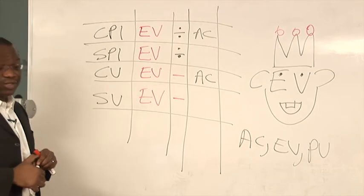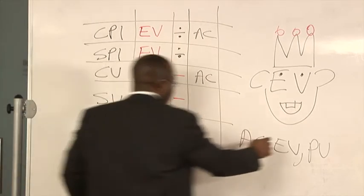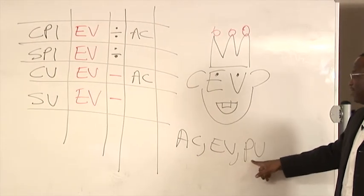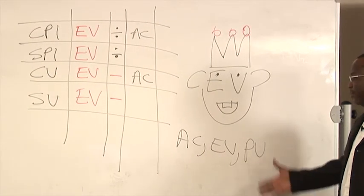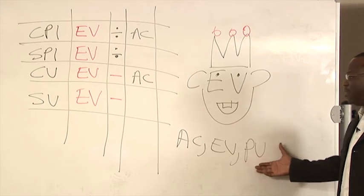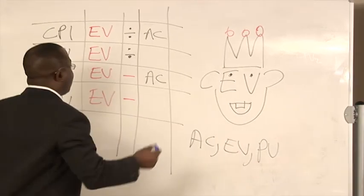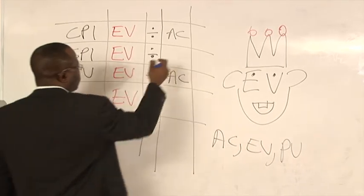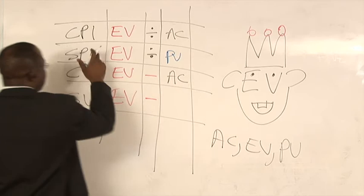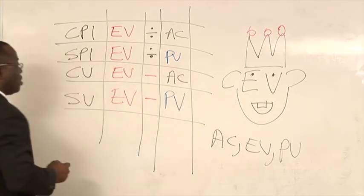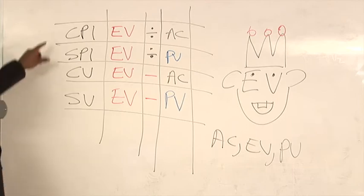If we're talking about schedule, plan value. The schedule is the plan. The plan is the schedule. I tell people when you think about plan, PV, think about schedule. So we're gonna take that number and we're gonna take that metric and we're gonna put it where we have the S for schedule. And that is how you come up with your four derivative metrics.